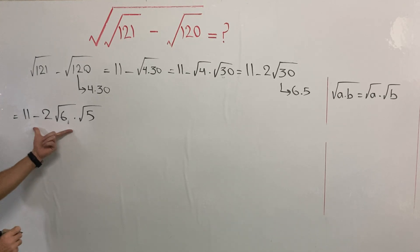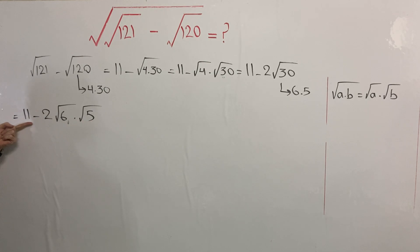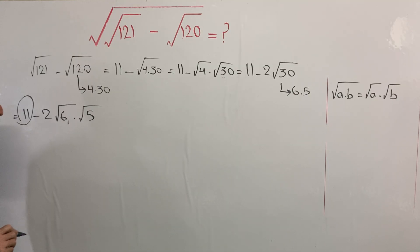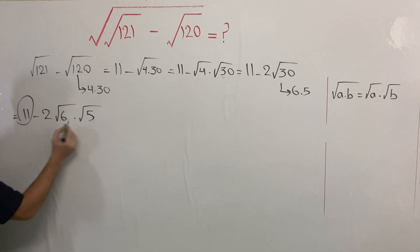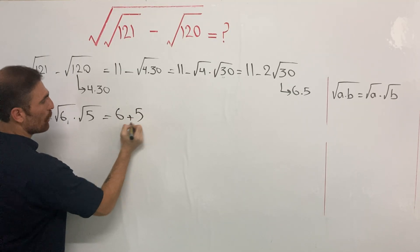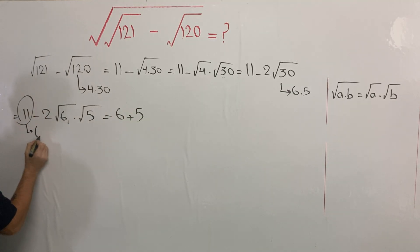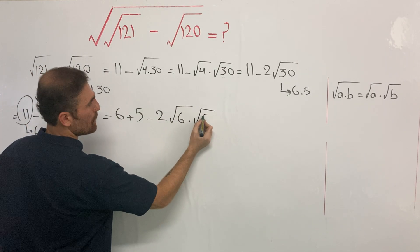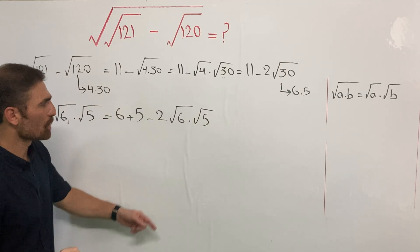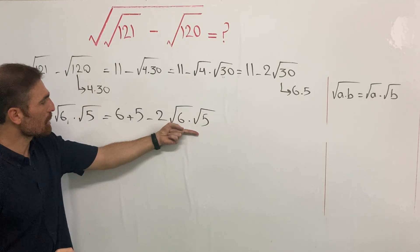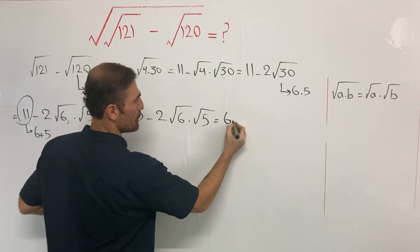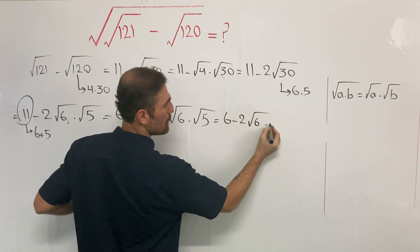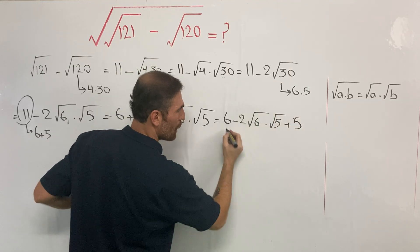Now we need to be a little bit tricky. Look — here we have 6, here we have 5, 2, and 11. I'm going to write 11 as the sum of two numbers. Can you guess what those two numbers are? 6 and 5, right. So it is going to be 6 plus 5 — meaning 11 — minus 2 times second root of 6 times second root of 5. Let me rearrange: 6 minus 2 times second root of 6 times second root of 5, plus 5.